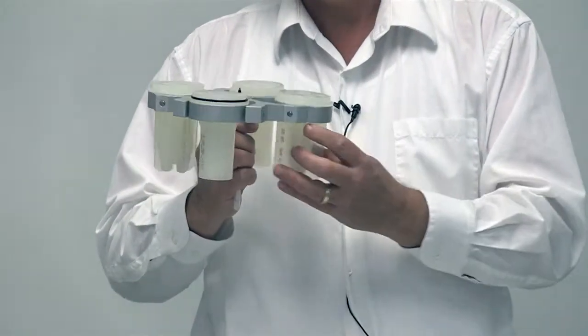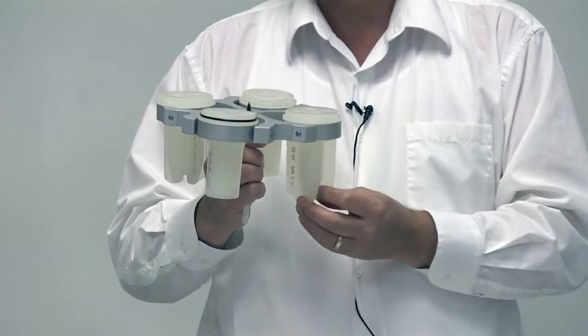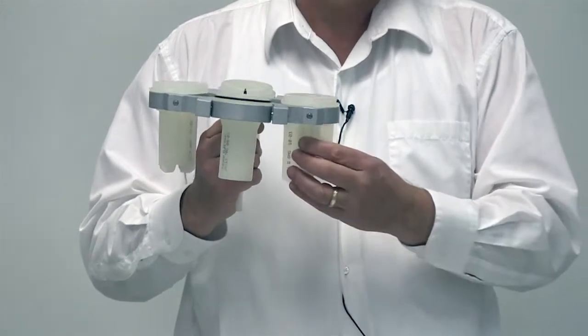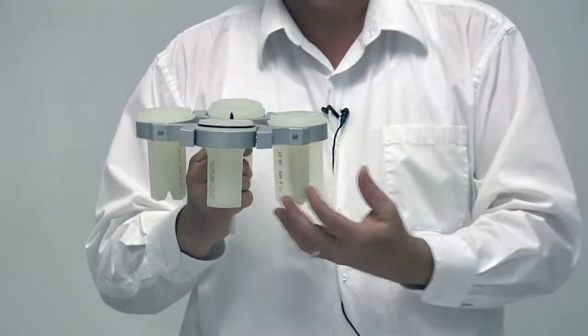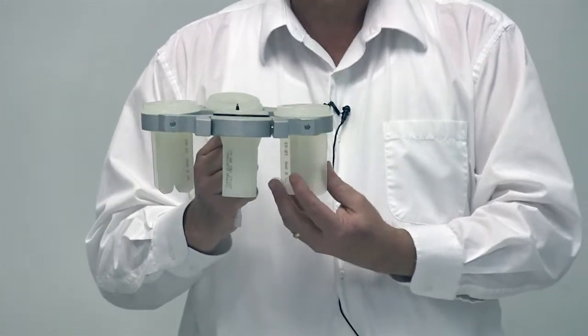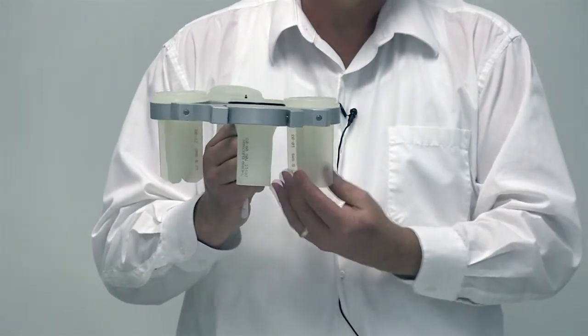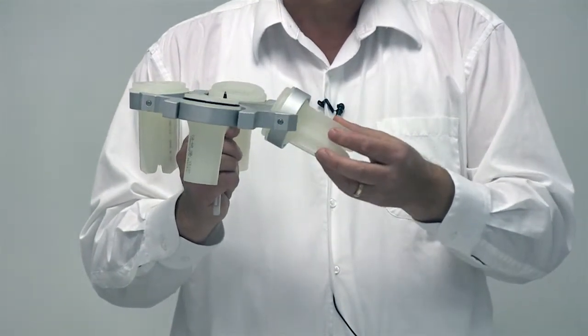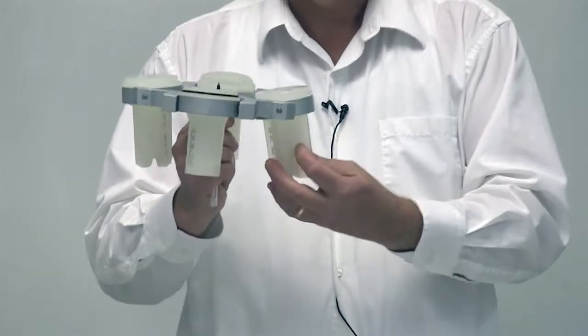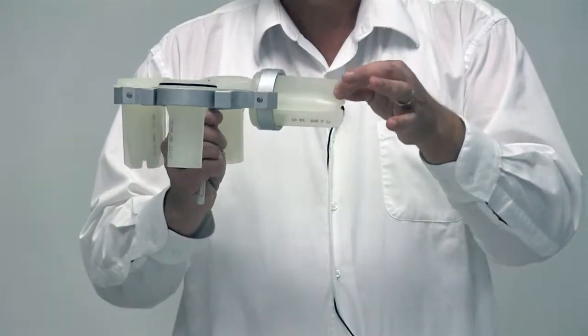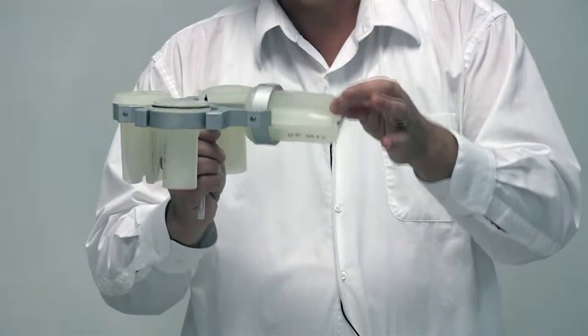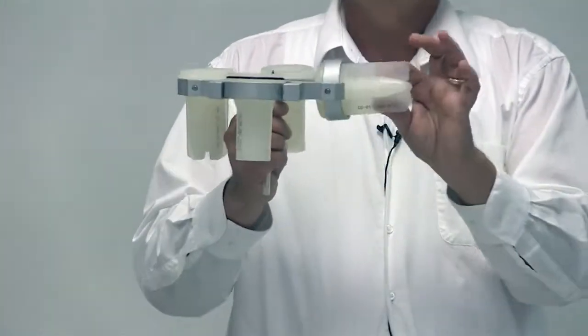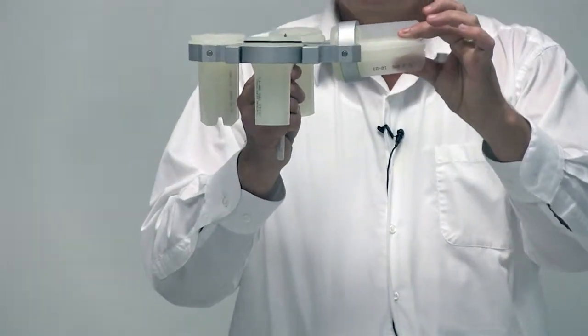Now remember that we're talking about centrifuging suspensions as opposed to solutions. We've talked about solutions where we have a solute dissolved in the solvent. In terms of a suspension, the particles are suspended in the liquid but they're not dissolved in it. The force of gravity applied by the centrifuge on these particles will cause them to proceed toward the bottom of the tube.